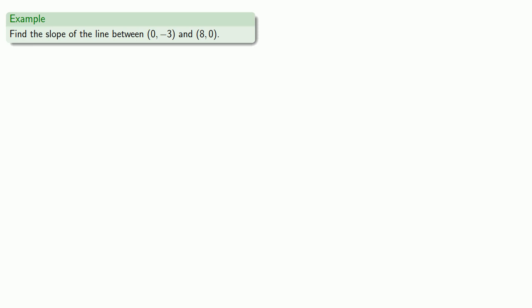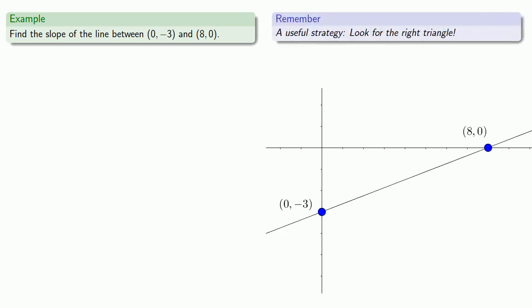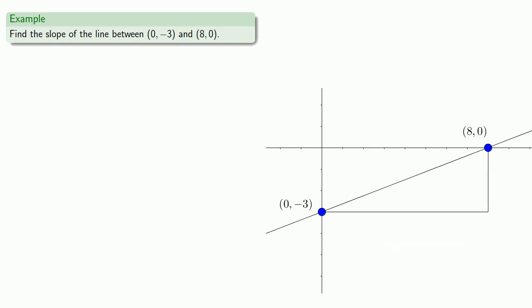We'll graph the points and the line. Again, a useful strategy is to look for the right triangle. We can use our two points as two of the vertices, and we'll extend sides horizontally and vertically from those points. Let's take a little run - we'll move horizontally from our starting point until we're right below our ending point.